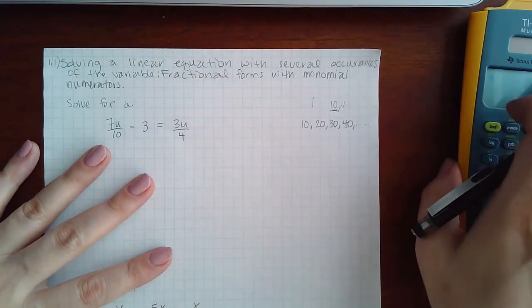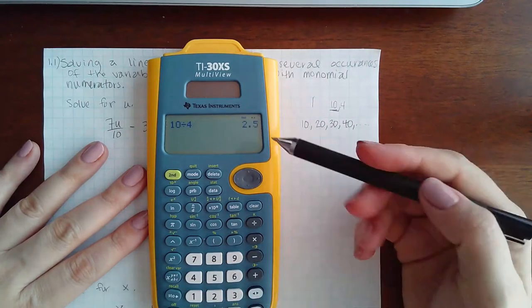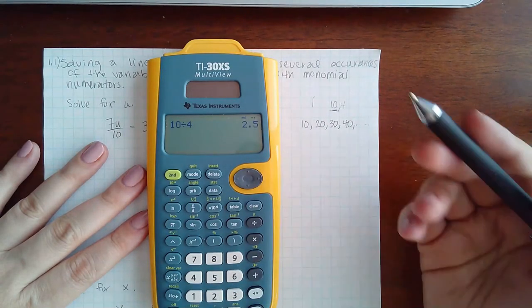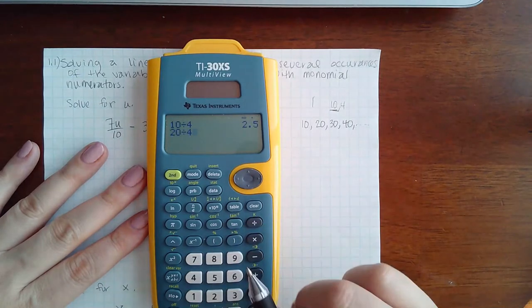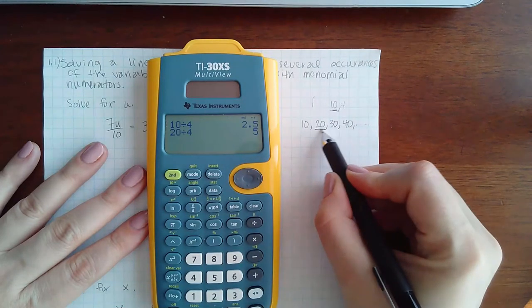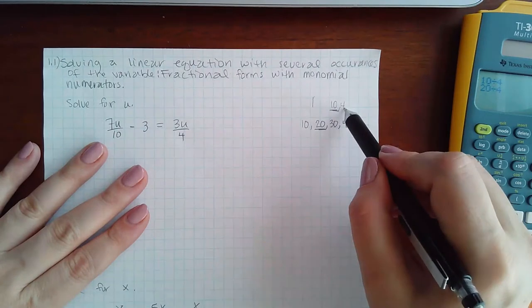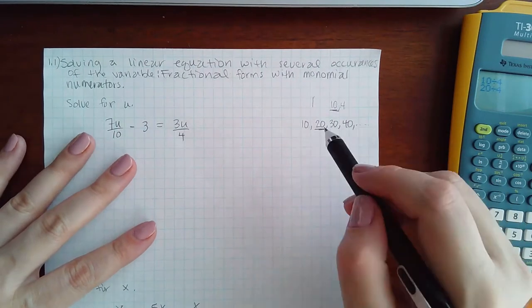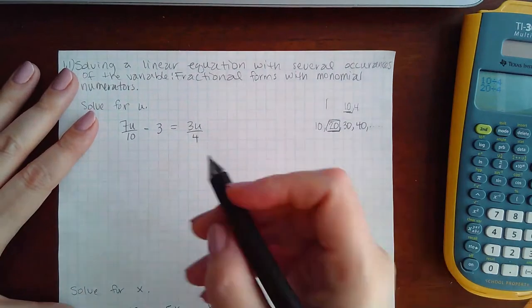Then what you do is you find the first one that can be divided by 4 evenly. So 10 divided by 4, that's a decimal which means it does not go into 10 evenly. 20 divided by 4 is a nice integer, 5. So this is the first number, the first multiple that 4 will go into. Therefore, this is going to be my LCD.